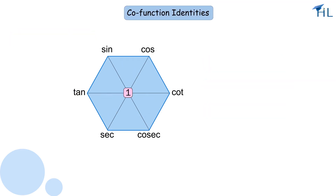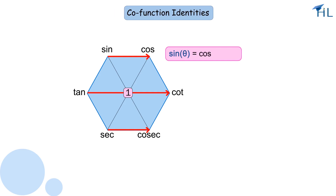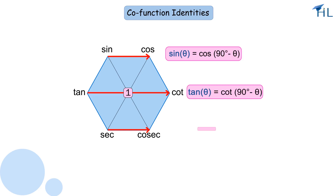Let us now draw horizontal arrows from sin to cos, tan to cot, and sec to cosec, which will give us the co-function identities: sin θ = cos(90° − θ), tan θ = cot(90° − θ), and sec θ = cosec(90° − θ).